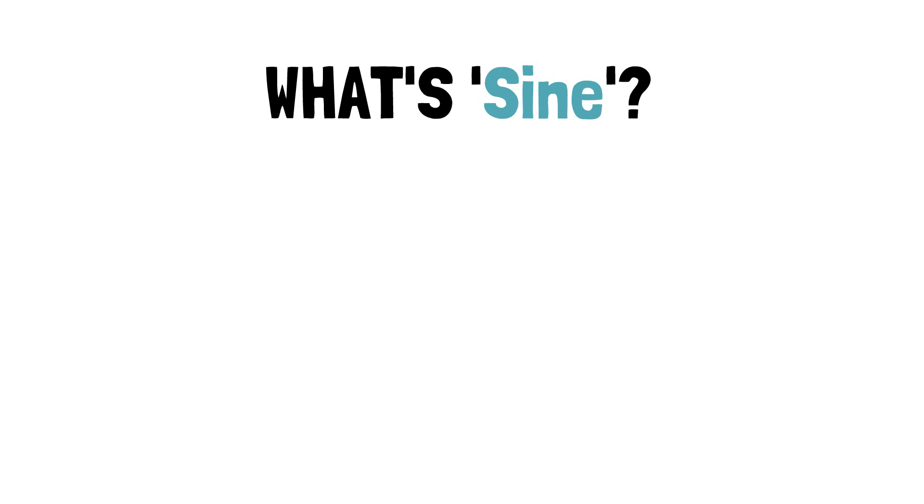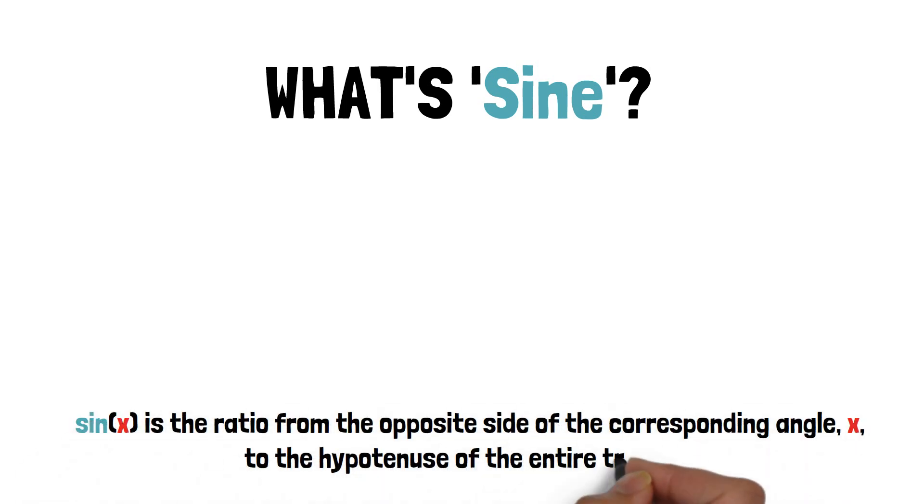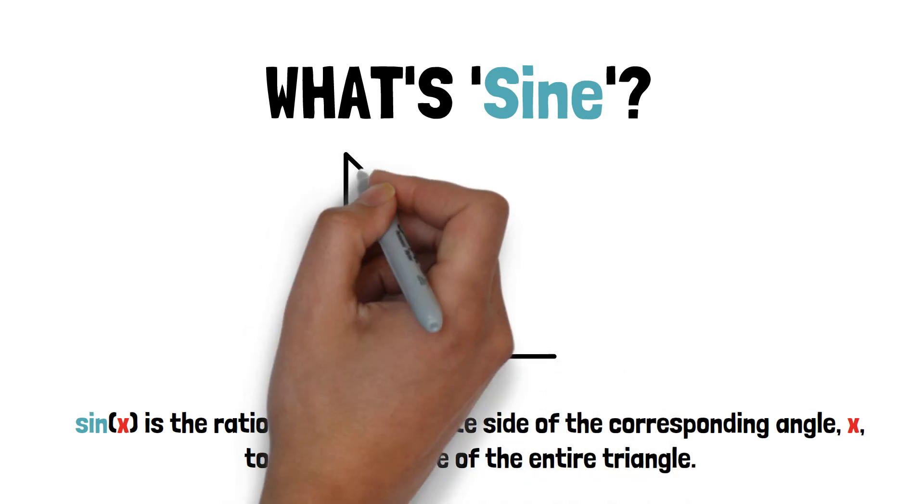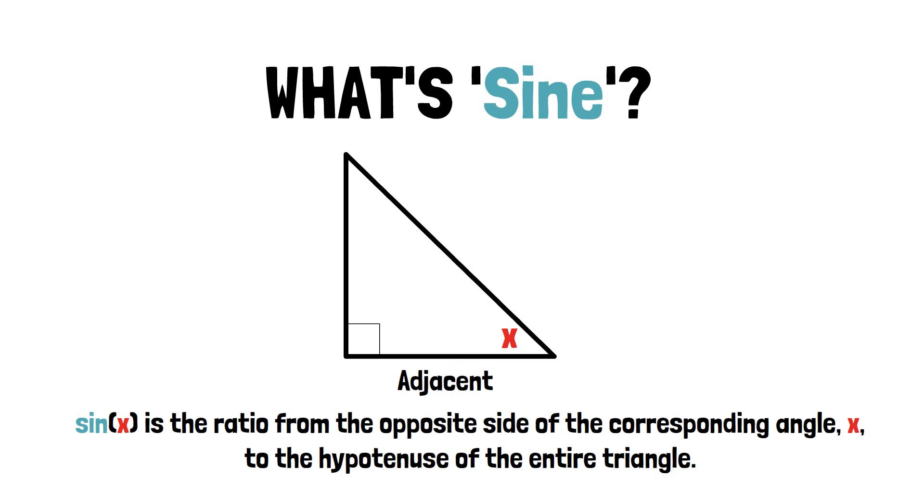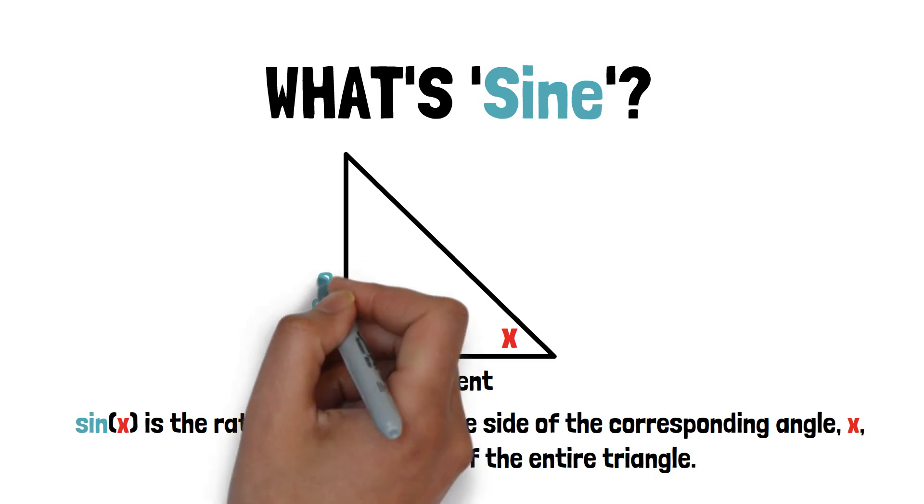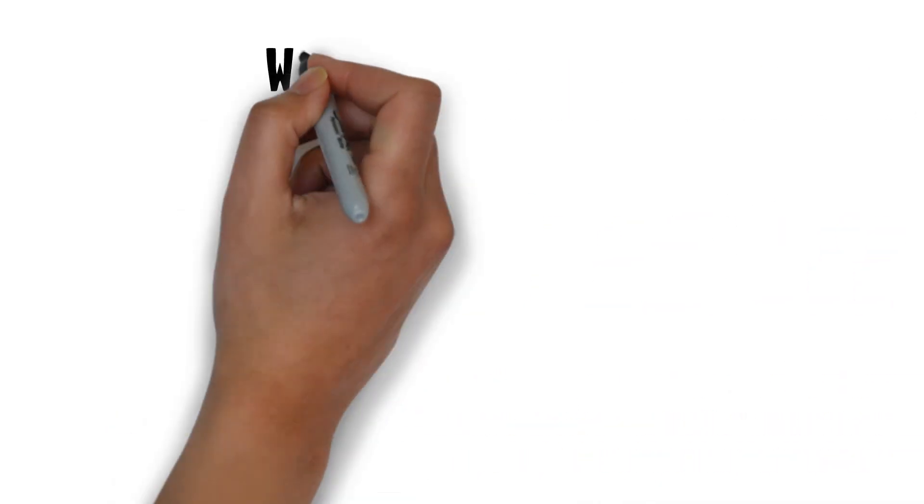So what exactly is sine? Sine of x is the ratio from the opposite side of the corresponding angle x to the hypotenuse of the entire triangle. What I mean is that there's an adjacent side, an opposite side of x, and a hypotenuse, which is the slanted side.